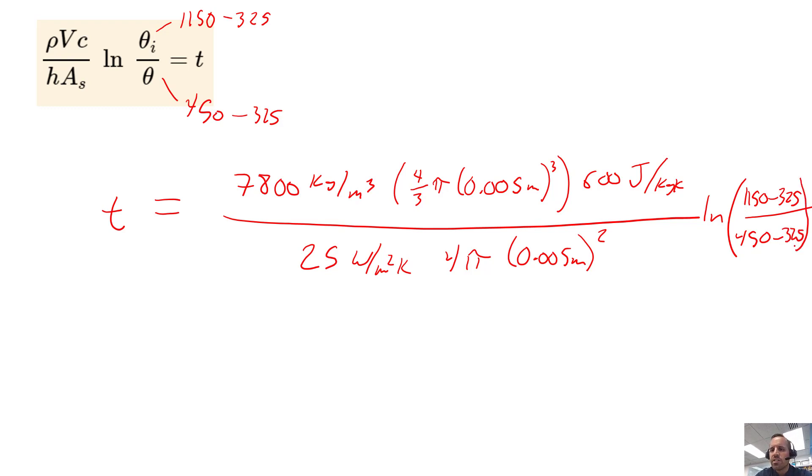Let's do a unit check. All the units for Kelvin cancel out. Meter squared cancels out here, meters cubed cancels out here, we have our kilograms canceling out, Kelvin canceling out there. So then we have joules left and watts. If you remember, a watt is a joule per second. So joules cancels out and we are indeed left with units of seconds.